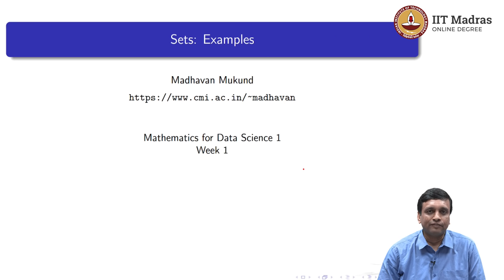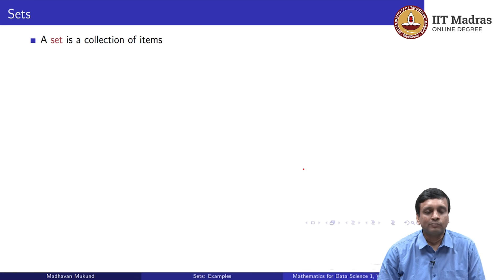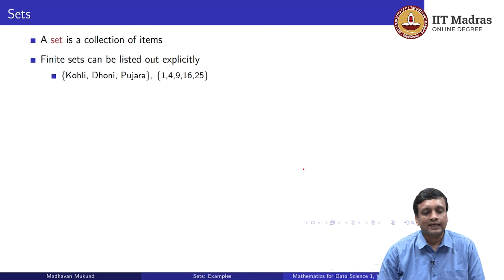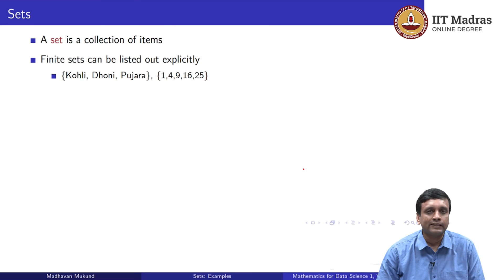We have seen some definitions of sets and some operations on them. Let us look at more examples to get familiar with the notation and the terminology of sets. Remember that a set is a collection of items, and when we write out a finite set, we can just enumerate the items by writing them within curly braces.